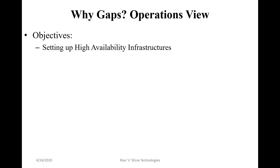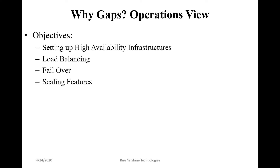The application must handle capacity — if one million users access it for one hour, it must handle that without failures. The operation team's main concern is production dominance: how to configure it, handle the application load, handle failures — storage, service, database, system failures — and manage scaling features and on-demand features.